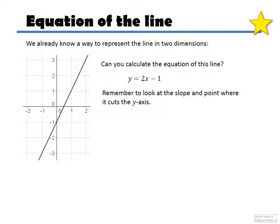And this one here is where it cuts the y-axis, right? So 2x minus 1 would be this line over here. And all the points in this line satisfy that equation, and that's why this is an equation of that line.